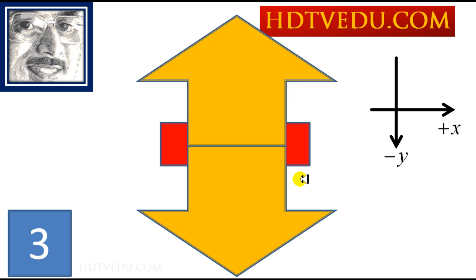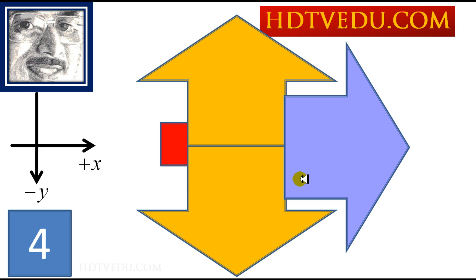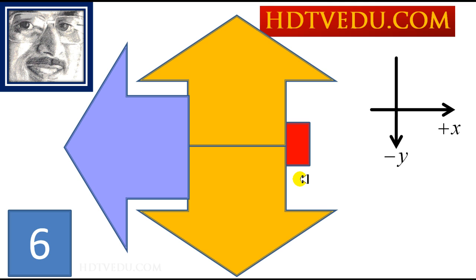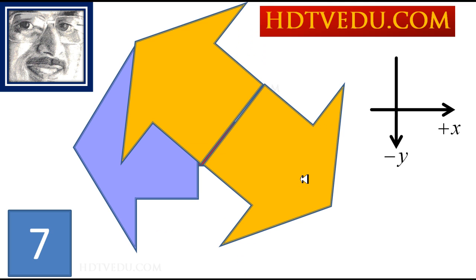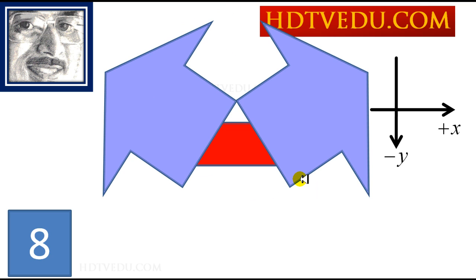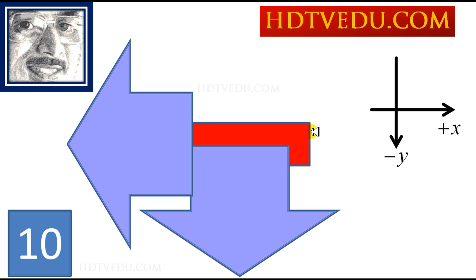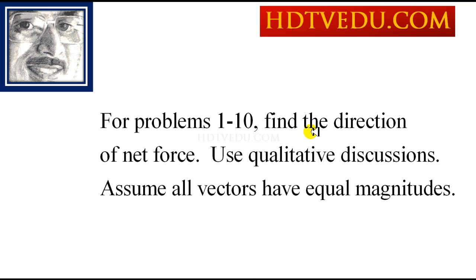Number 3, what is the net force? Number 4, what is the net force? Number 5, what is the net force? Number 6, what is the net force? Number 7, what is the net force? Number 8, what is the net force — assume these back vectors make 45 degrees with respect to the horizontal. Number 9, what is the net force — again assume 45 degrees. Number 10, what is the net force?